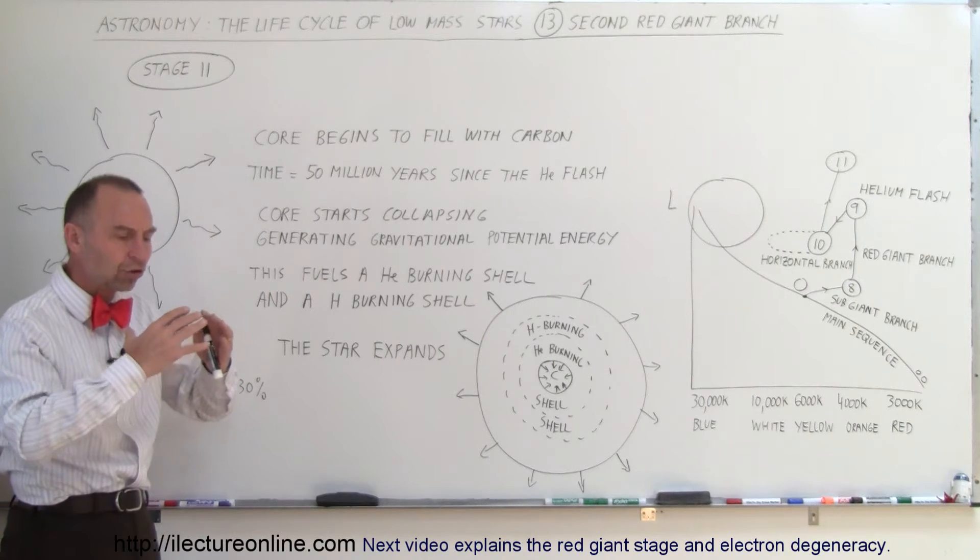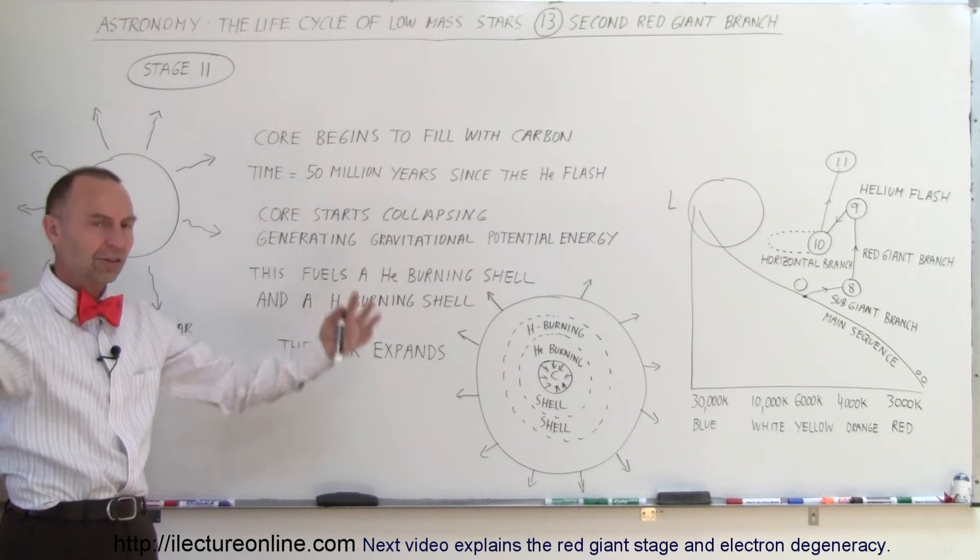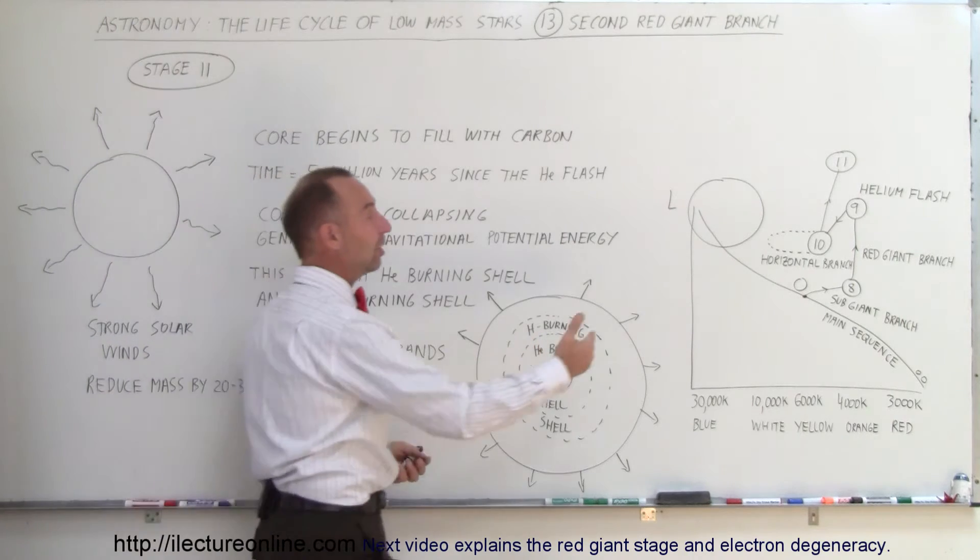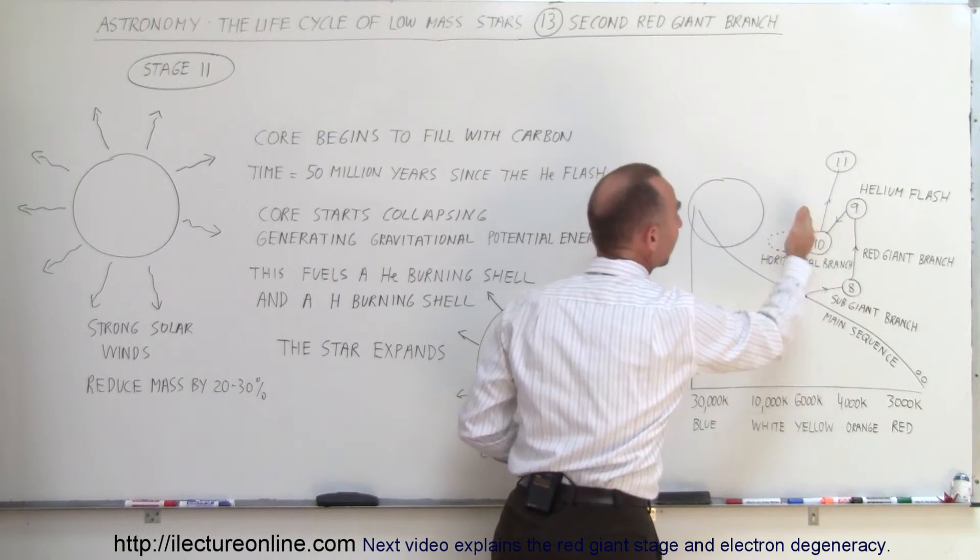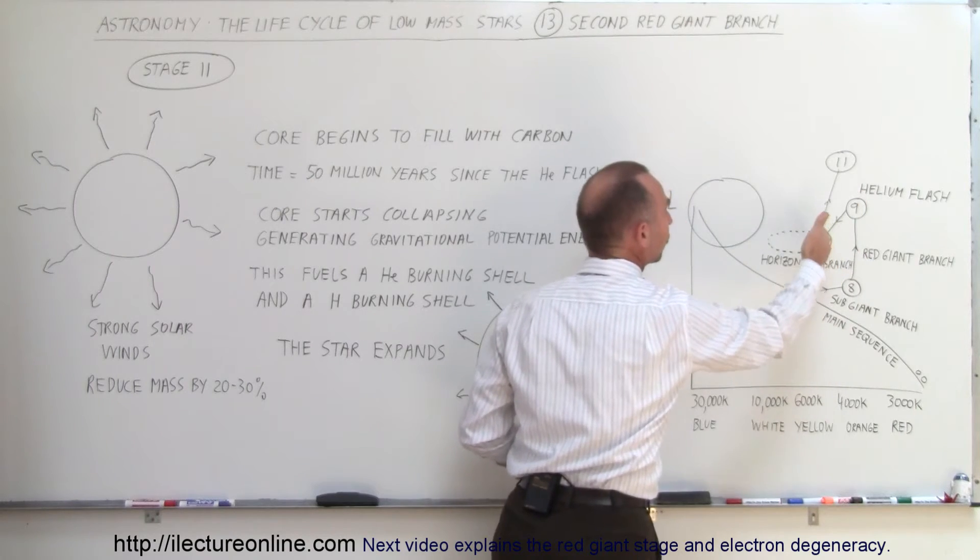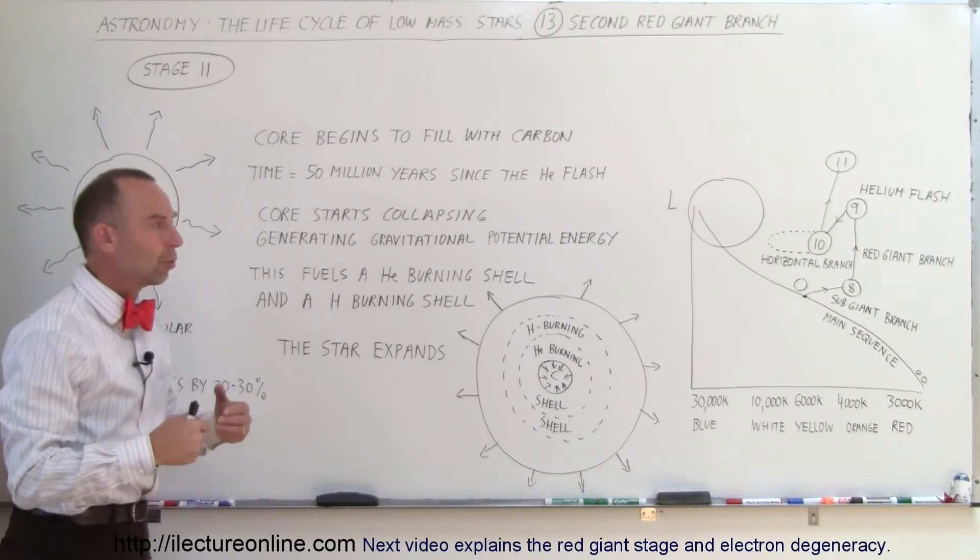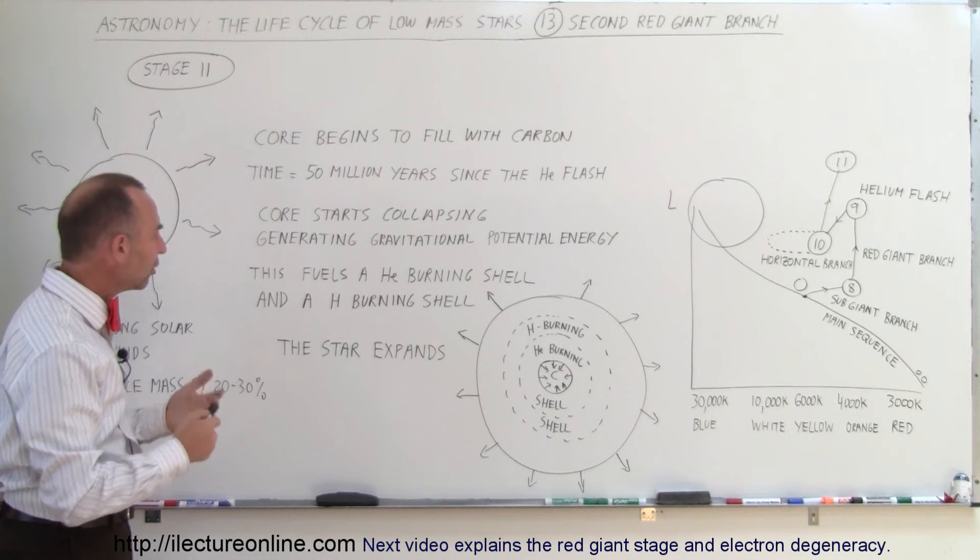Because of that additional heat being generated, the star begins to expand again. As the star begins to expand and becomes larger, since the surface area becomes larger, the luminosity of the star increases. You can see how the star begins to climb back up the HR diagram in parallel to the first red giant branch. We now have what we would call our second red giant branch with the star becoming larger and more luminous.